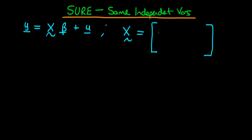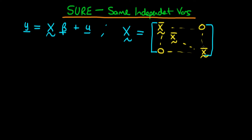But in the circumstance where each of the individuals in our system actually has the same right-hand side variables, each of these matrices along the diagonal is going to be the same. So we can write the first matrix along the diagonal as x̄, the second one as x̄, and we continue all the way up to the nth individual where we'd have x̄ as well. Just as we always assume with SUR systems, each of the off-diagonal elements are equal to zero.